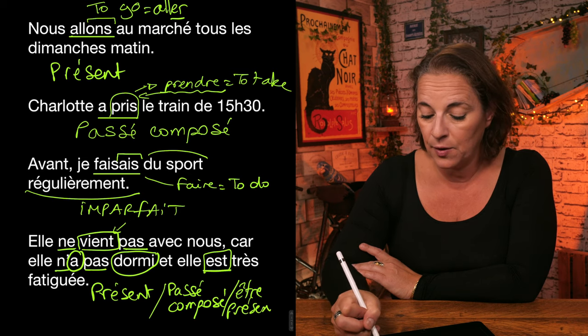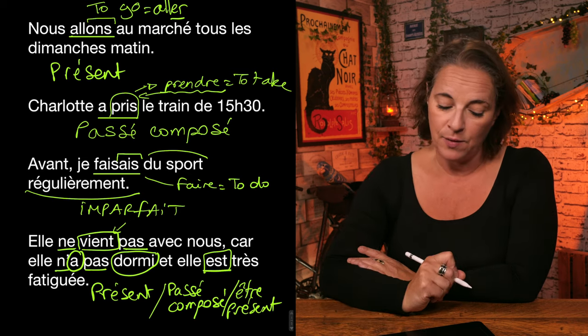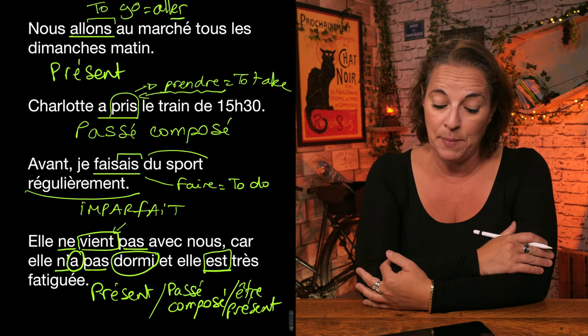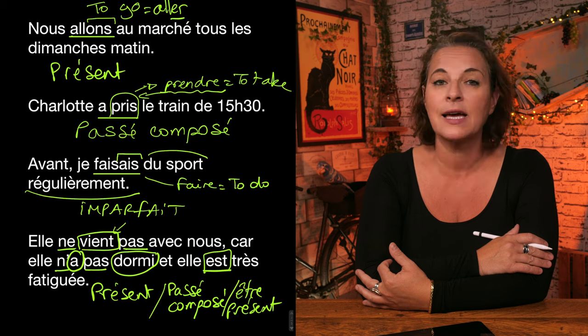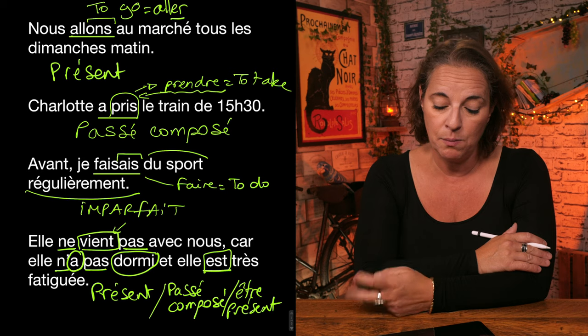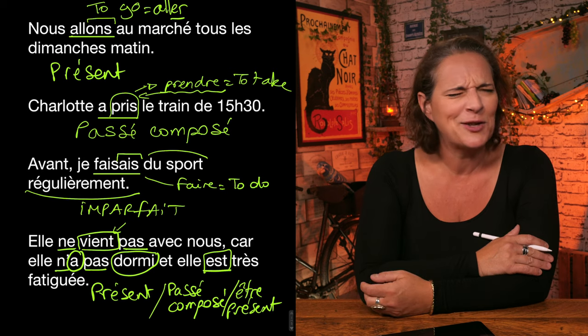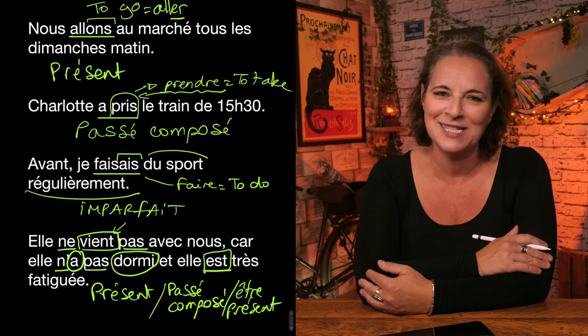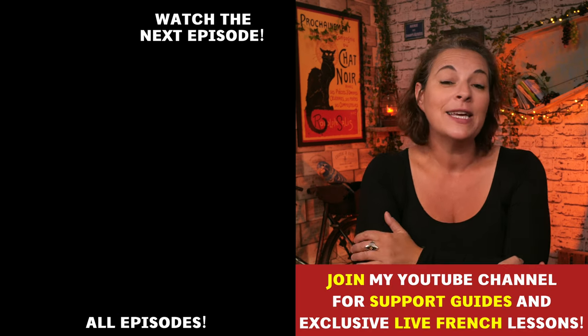So here we go. Elle ne vient pas avec nous. Car, elle n'a pas dormi. Et, elle est très fatiguée. We've got three tenses going on here. Présent. Passé composé. Two. Three. We've got two tenses coming here in this sentence. Présent and passé composé. That's it for me.